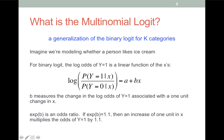So what is a multinomial model? We can think of it as a generalization of the binary logit, except instead of two categories we've got k categories. Let's briefly review the binary logit. Imagine we're modeling whether or not a person likes ice cream. In a binary logit, we say the log of the odds that the dependent variable equals one — a person likes ice cream — is a linear function of the X's. With one X, say age, the log odds increase by b for each year of age.